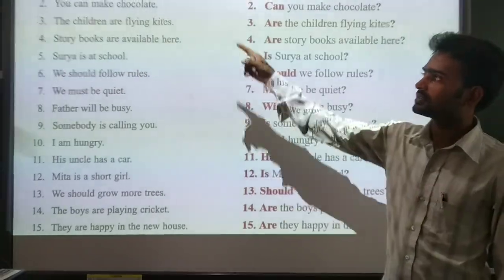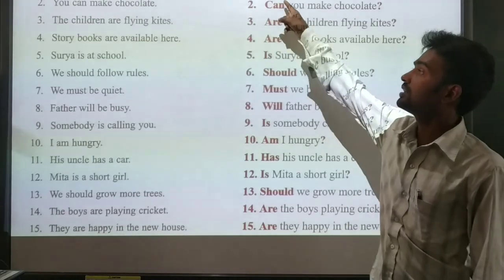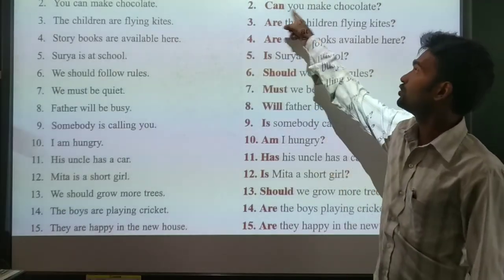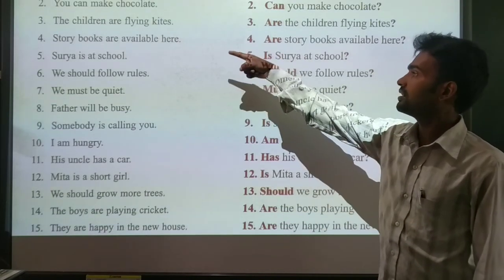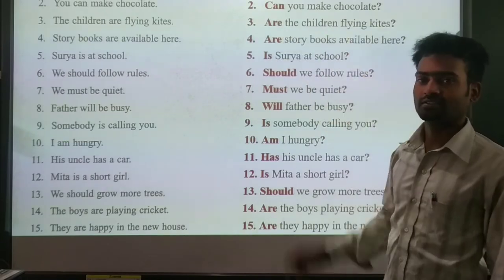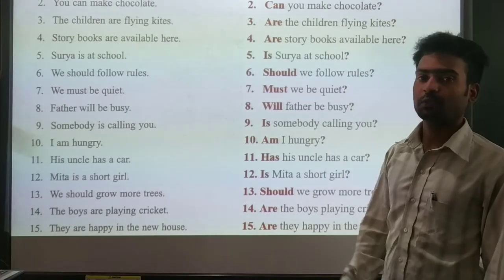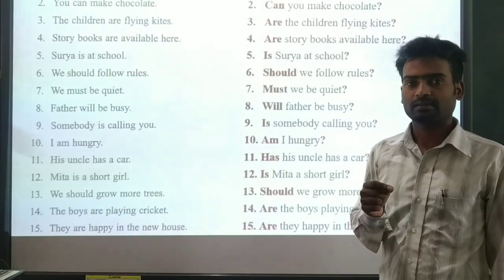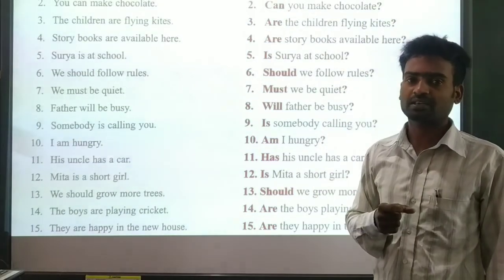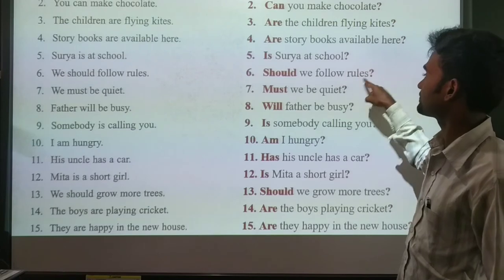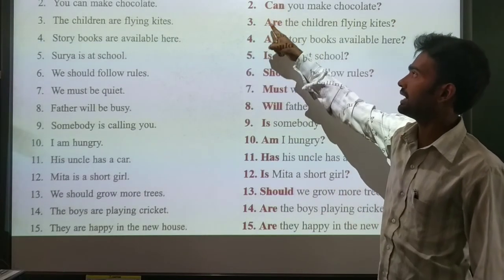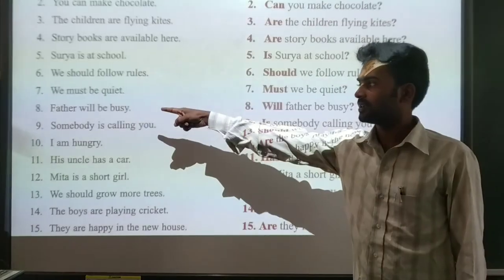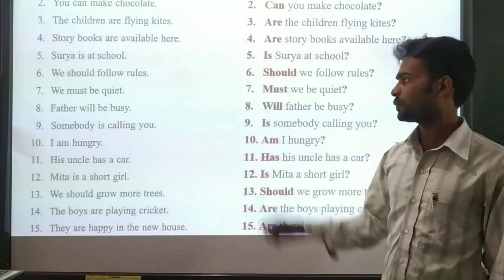Next exercises: 'Saudi is a good girl' - we bring 'is' before the subject to make the question. 'Can you make chocolate?' - we bring 'can' before. 'Are all the children flying?' - bring 'are' before. These auxiliary verbs available in the sentence - we have to bring them to the beginning of the sentence to make a question. 'Father will be busy' becomes 'Will father be busy?'